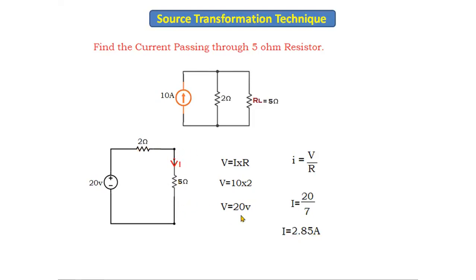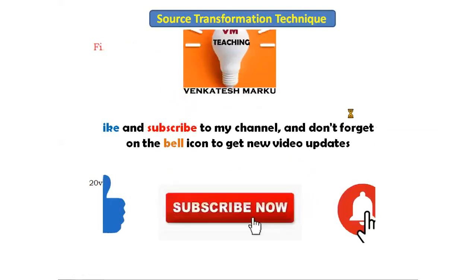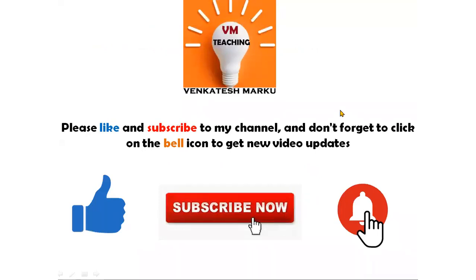The current passing through the 5 ohm resistor is 2.85 amperes. This is how we use source transformation technique to simplify a circuit. If the circuit is in practical current source form, we convert it to a practical voltage source — the resistor value stays the same and we find the voltage using Ohm's law to determine the required quantity.